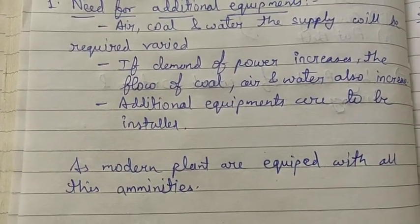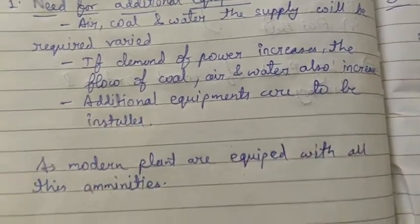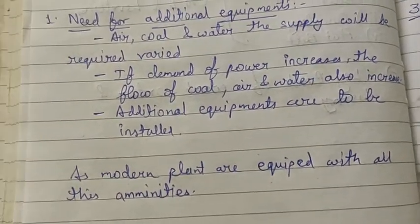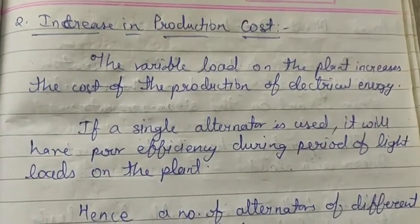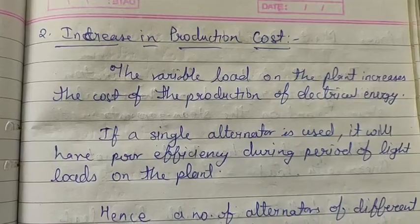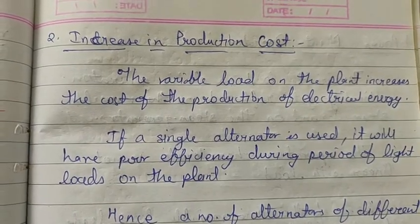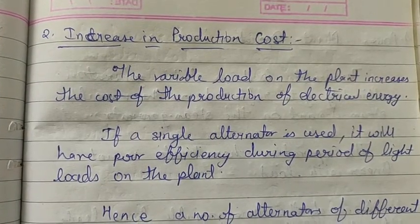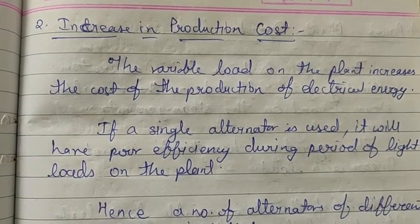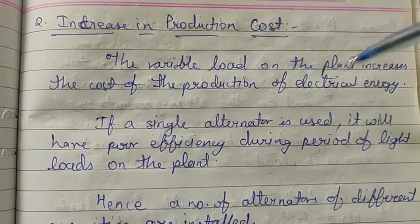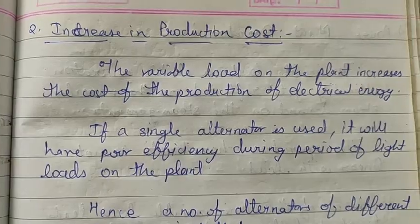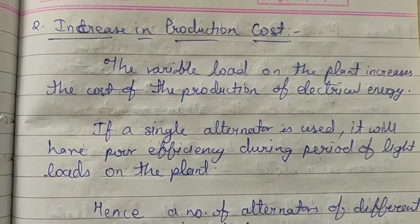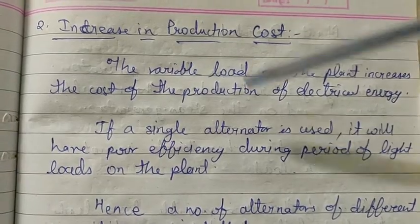The plant must be equipped with all required equipment even when it is not always needed, which adds to faults and production costs. If demand and load fluctuate, the production cost will be higher, because you need equipment that can work efficiently under fluctuating demand. For example, with an alternator running below its rated capacity, there will be wastage and poor efficiency during periods of light load.